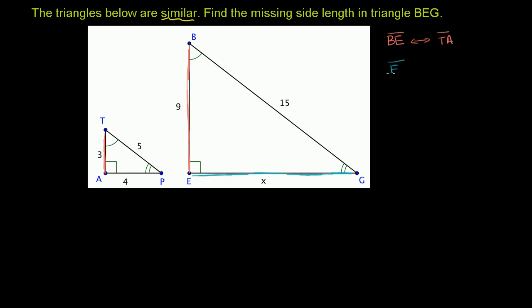We know that side EG corresponds to, it's between the right angle and the double arc angle, it corresponds to side AP.